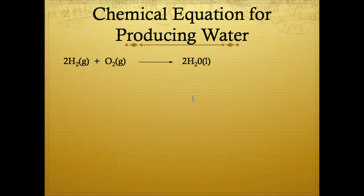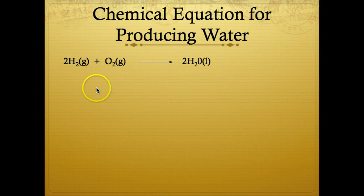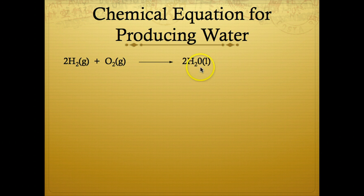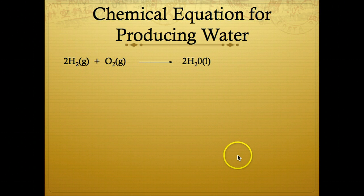The equation at the top of the slide conveys all the information given by that long wordy description, plus it is balanced — which we're going to discuss in a few minutes. You can see there are two molecules of hydrogen gas plus one molecule of oxygen gas forming two molecules of liquid water, where the little (g) means gas and the little (l) means liquid.